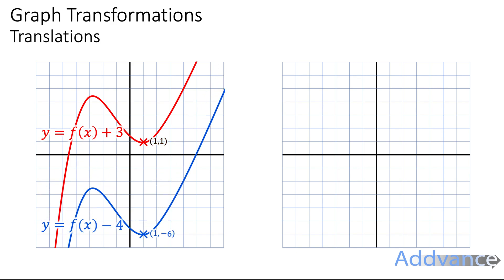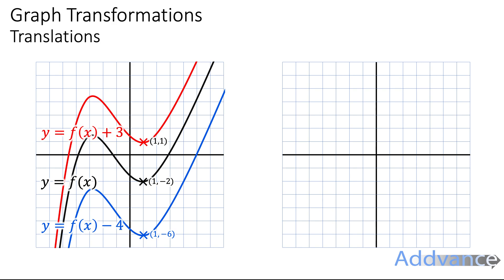If we subtract 4 from the equation of the curve, it moves it down by 4 squares. We're focusing on the y-coordinate here because we're moving it up and down — up 3 spaces or down 4 spaces. Notice how the y-coordinate has gone up by 3, and the y-coordinate has gone down by 4, from -2 down to -6.